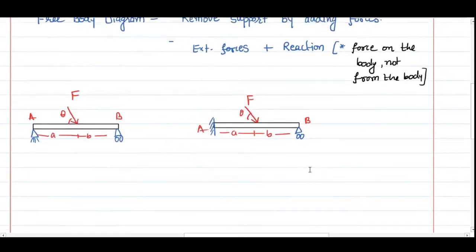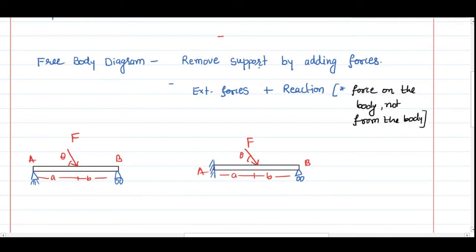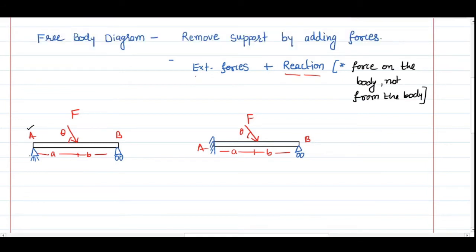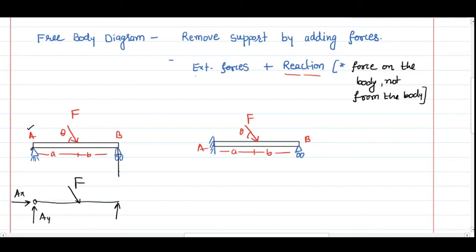When making the free body diagram, you remove the supports and replace them with reaction forces, while keeping external forces in place. For example, with two beams — one with a pin joint at A and one with a fixed joint at A — you represent the beam as a single line. For the pin joint, apply Ay and Ax with no moment; the roller gives one perpendicular reaction force.